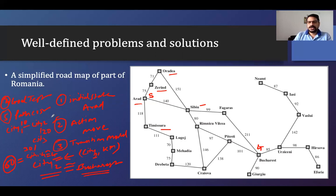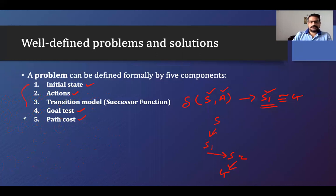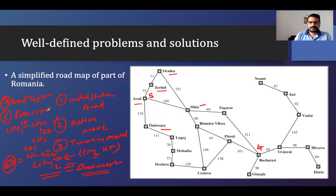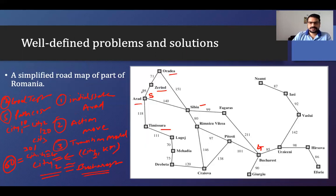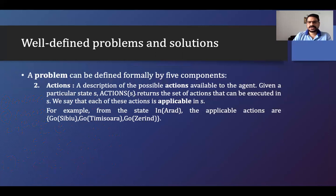I hope you understand all five components related to problem formulation. The initial state describes where the agent starts — for example, the agent is in Arad. The actions describe what operations are available — I can go from one city like Sibiu or Zerind to reach somewhere. 'Go' is the action.